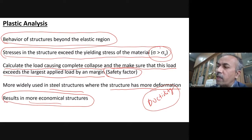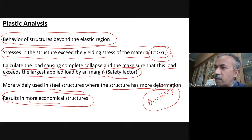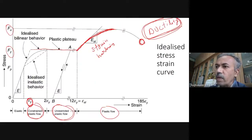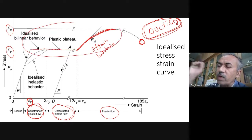The main reason why we did this plastic analysis — you could have watched those videos or studied this. Generally, steel has very high ductility; the stress-strain curve shows huge reserve strength is there. So why don't we use this reserve strength in steel?